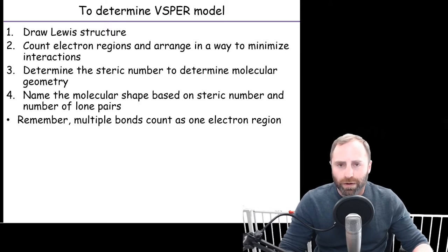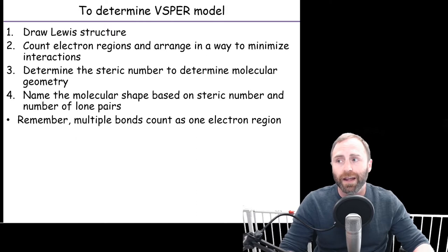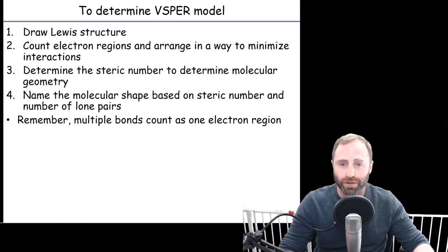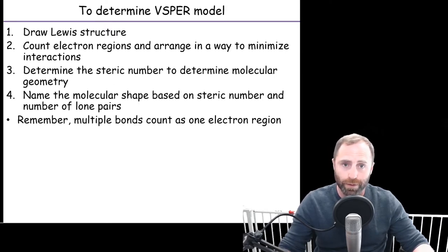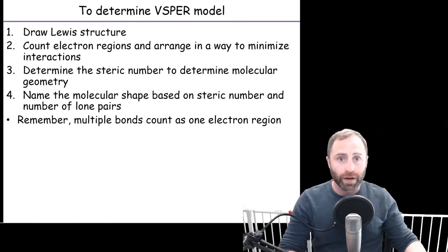An important point about bonding regions: when we say a bonding region, we're not asking whether it's a single, double, or triple bond and counting those separately. We're saying if you have a region that contains electrons and it is a bonding region, a single bond, a double bond, or a triple bond all count as one bonding region. A single bond versus a triple bond — both of those are one bonding region.